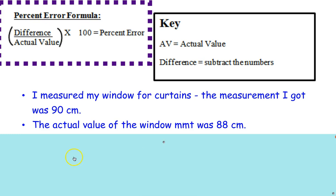Well, let's go back to our first step, which was to subtract the two numbers. So I'm going to do 90 minus 88. That's my difference. Remember, the difference is where you subtract the numbers. 90 is one number, 88 is the other number.